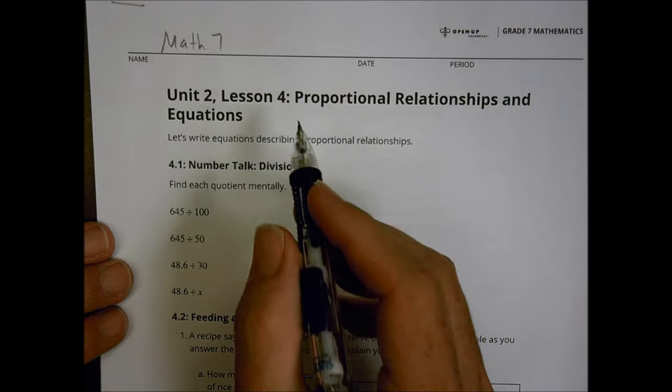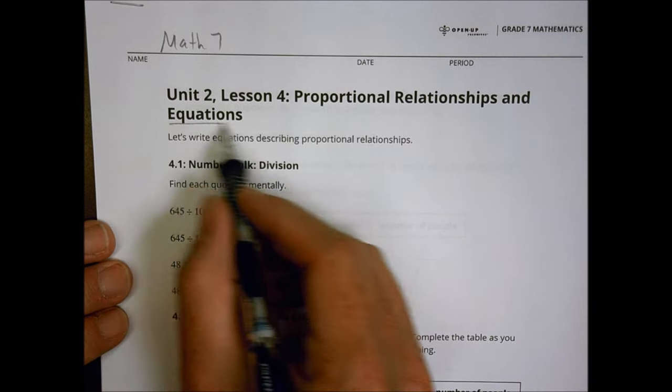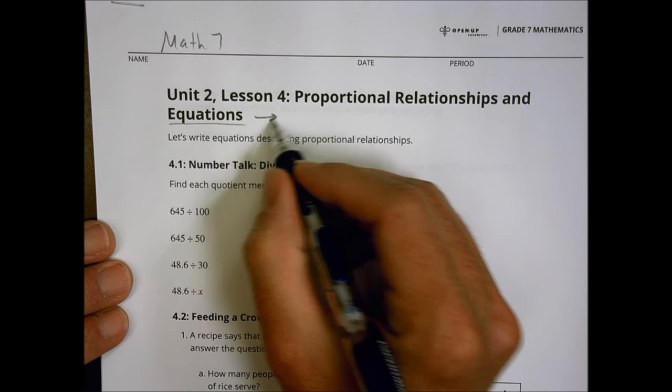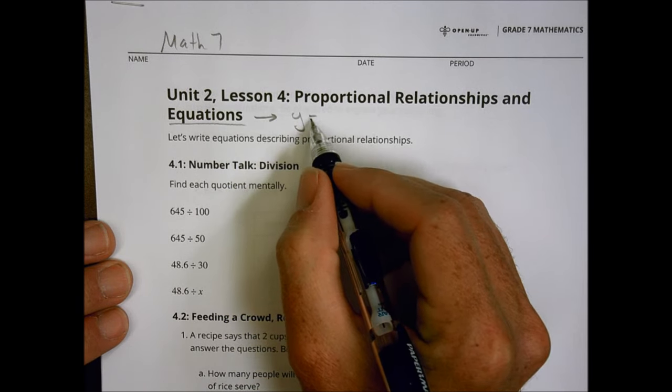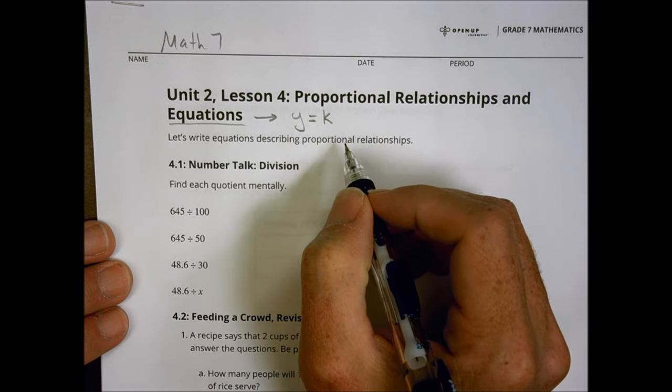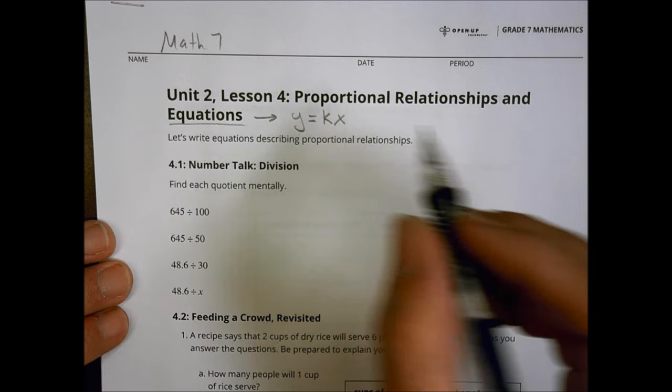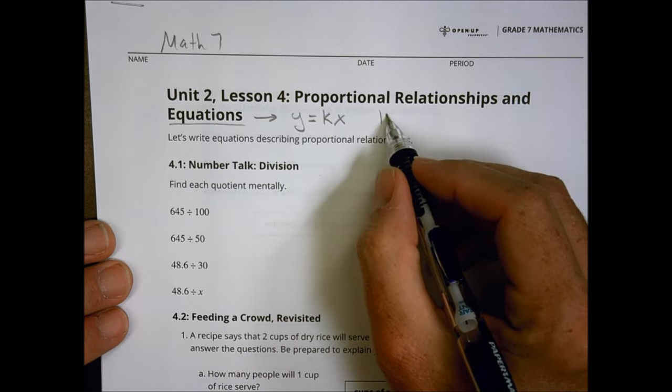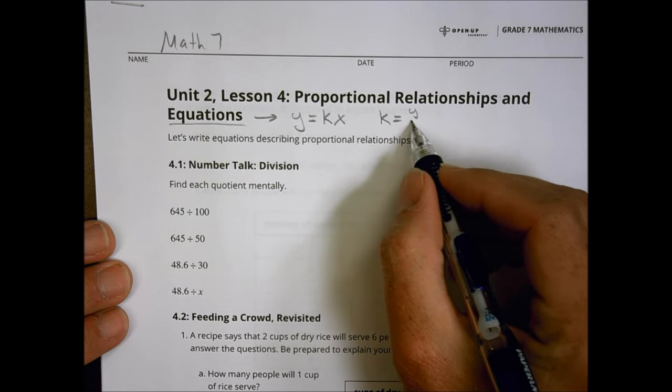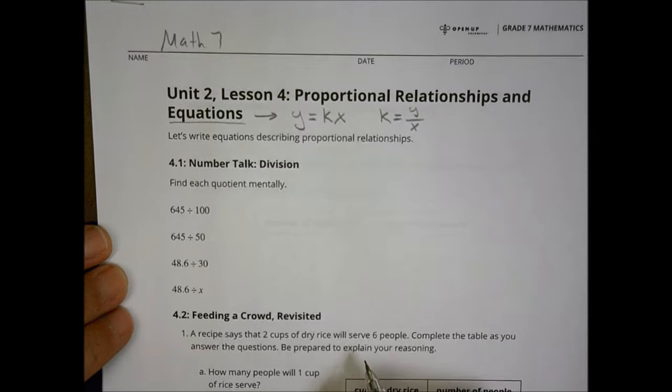Hey there, this is Math 7, Unit 2, Lesson 4. We're now looking at proportional relationships and equations today. We're going to be adding an idea about an equation today. Something like a y value is going to be equal to a constant proportionality, which we tend to call a k value, times the x value. Our constant proportionality is always equal to our y value over x value.